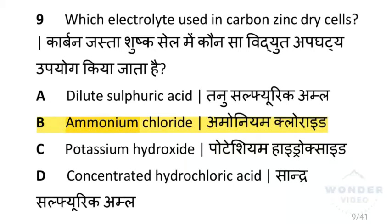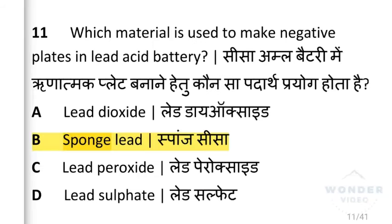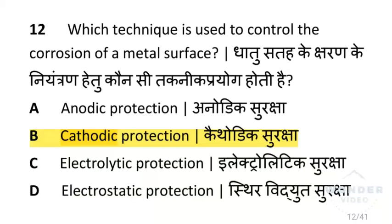Which electrolyte is used in a carbon zinc dry cell? That is ammonium chloride. Which effect is caused by passing electric current in a liquid? That is the chemical effect. Which material is used to make the negative plates in a lead acid battery? That is sponge lead. Which technique is used to control the corrosion of a metal surface? That is cathodic protection.